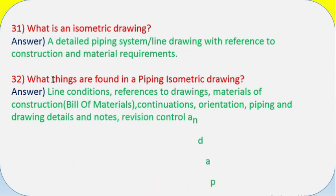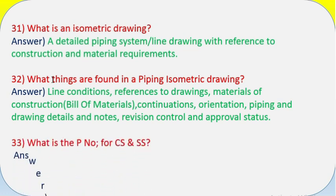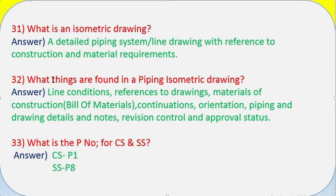Revision control and approval status. Question 33: What is the P number for CS and SS? Answer: CS - P1, SS - P8.